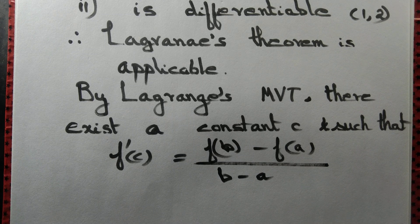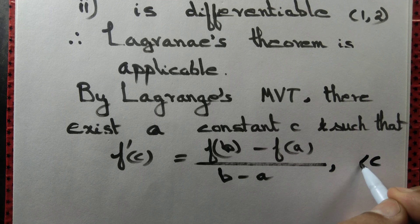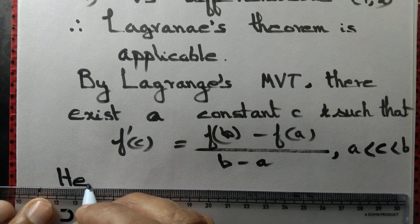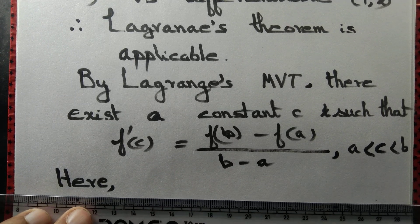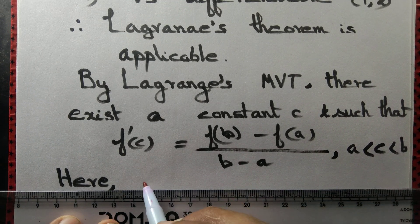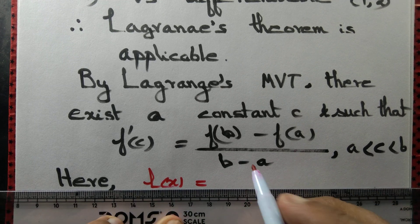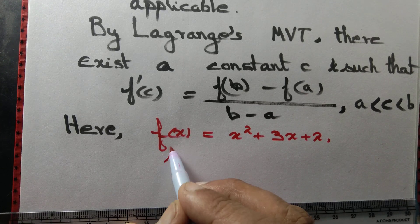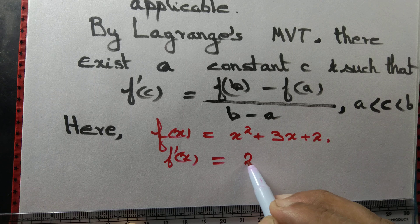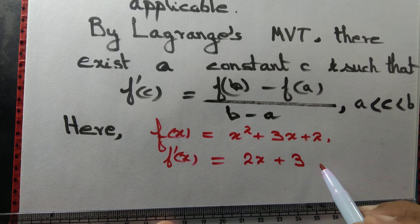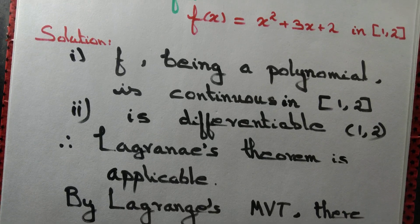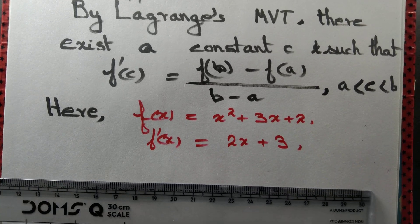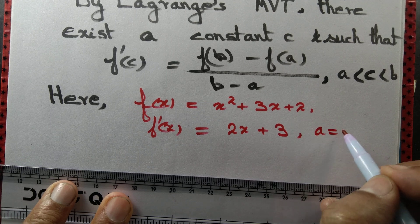Here, a and b are the endpoints of the interval, with c greater than a and less than b. For our function f(x) = x² + 3x + 2, the derivative is f'(x) = 2x + 3. Since we are working on the interval [1, 2], we have a = 1 and b = 2.